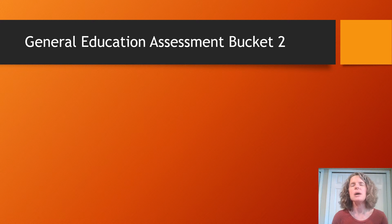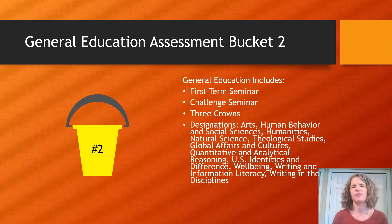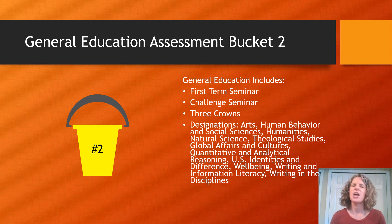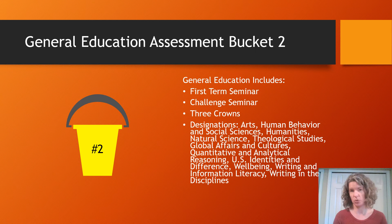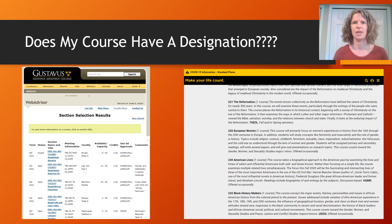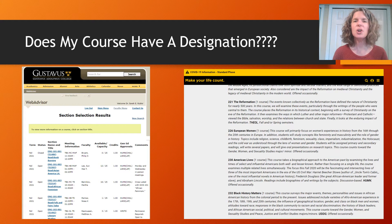That was bucket number one. Bucket number two is general education assessment. If you're teaching a first-term seminar or challenge seminar, teaching in the Three Crowns program, or teaching any of the general education designations, your course is in this bucket. If you're new and don't know if your course has a designation, ideally a department chair would tell you, but here are two other ways: you can go to the course catalog where designations are listed at the end of course descriptions, or you can go to WebAdvisor and look under general ed approvals. Or ask your department chair, or feel free to email me.